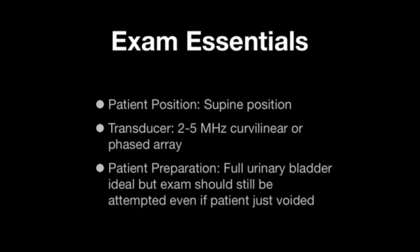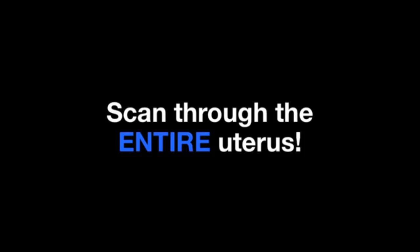For the transabdominal pelvic exam, the patient should be in the supine position. I recommend using a large footprint 2 to 5 megahertz curvilinear transducer, which allows adequate penetration in the average-size adult. A full urinary bladder is ideal, but the exam should still be attempted even if the patient has just voided — as is often the case in the ED. Make sure to scan through the entire uterus; this is essential.